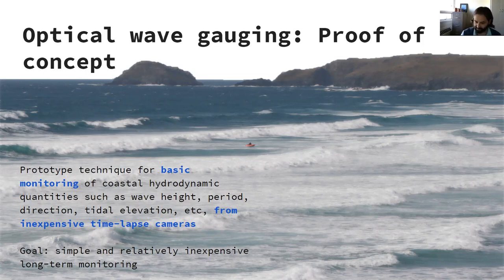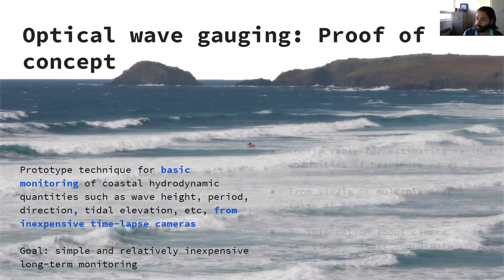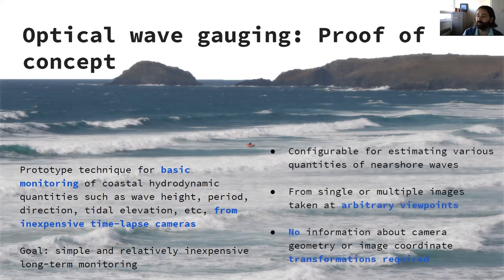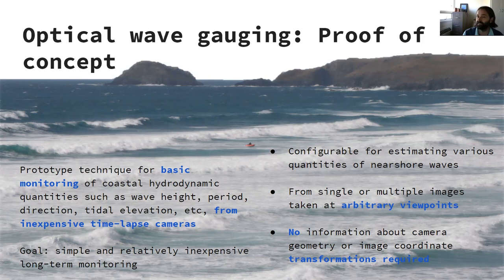What I'm after is a technique that is not overly sensitive to the camera itself, the treatment of the data, or the camera geometry. I want something simple and relatively inexpensive, so I want to develop a method that can use consumer-grade cameras. I want it to be configurable for estimating a number of different quantities from the nearshore, especially those traditionally very difficult to estimate such as wave height. I want it to take as inputs arbitrary images that don't necessarily have a regular spatial footprint, not always looking at the same scene.